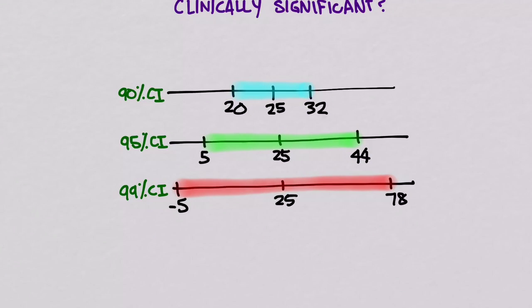Let's look at the different kinds of confidence intervals you can get. The more confident you want to be about something, the bigger the interval you're going to have. So the more confident I want to be that my interval contains the true value, I have to have a bigger interval. If I'm willing to be less confident, I can have a smaller interval.